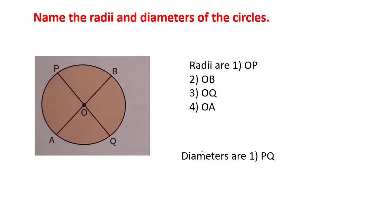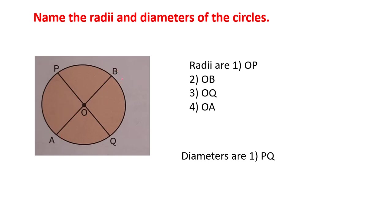Now next, diameter. First one is PQ. It should follow two conditions: first, it has to pass through the center — P and Q do pass through the center. Second, the endpoints of PQ should lie on the circle — both endpoints lie on the circle. Because of that, PQ is called the diameter. There is one more line segment passing through the center with endpoints on the circle: from A to O to B, so the line segment is AB. Both endpoints of AB lie on the circle and it passes through the center, so AB is also a diameter.